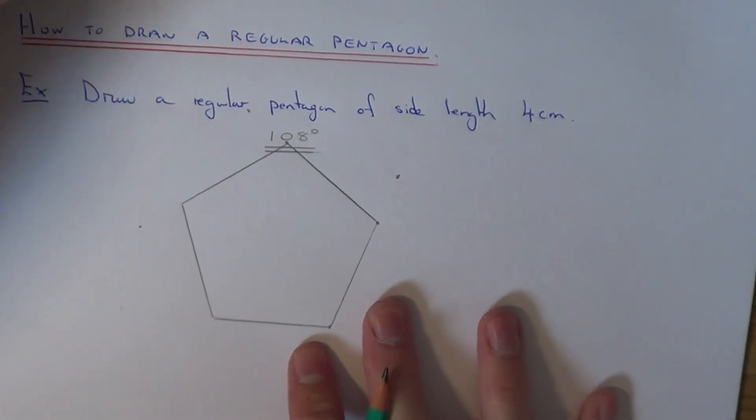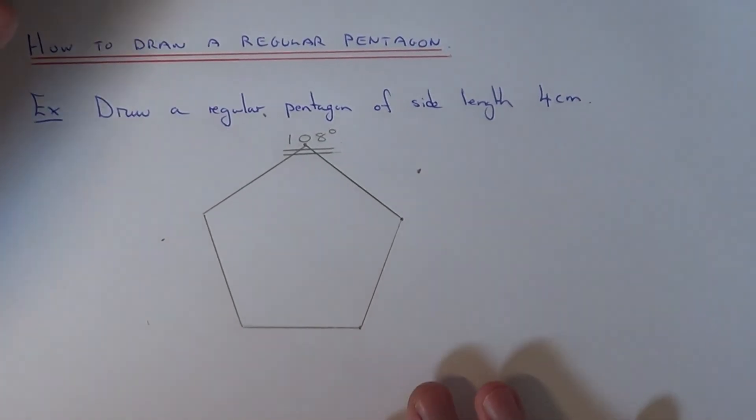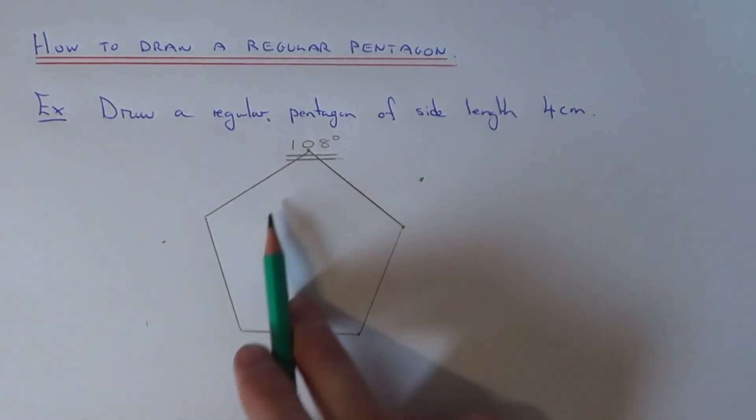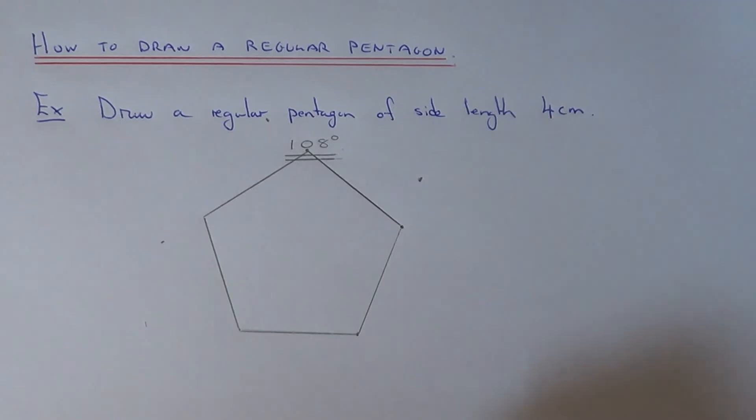Just turn the page back around. So as you can see, there's your regular hexagon. So it's got five equal sides and all the interior angles are 180 degrees. Thanks for watching.